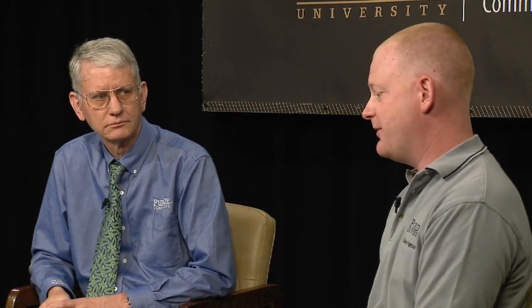It's actually these two indirect emissions — Scope 2 and Scope 3 — that a lot of the offset markets we're going to talk about today are trying to account for. We want to spend a couple minutes talking about how these markets work so people can get a good sense of what's driving demand for carbon offsets and carbon sequestration in agriculture. I divide these carbon markets into two different types.